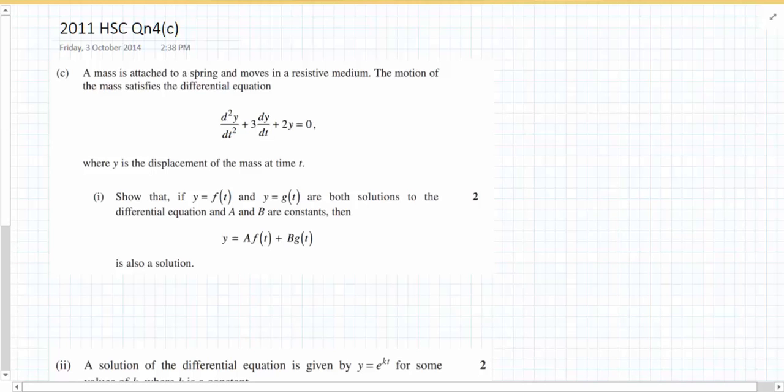Now there's a few things that make the question seem hard and tricky, but the reality is the solution is quite straightforward. When it says it's attached to a spring and moves in a resistive medium, that gives the impression we're looking at mechanics. Straight away when I see spring I think maybe simple harmonic, and then resistive medium I think mechanics. But if we accept the question for what it is and keep reading and just use our logic, then the solution should fall out.